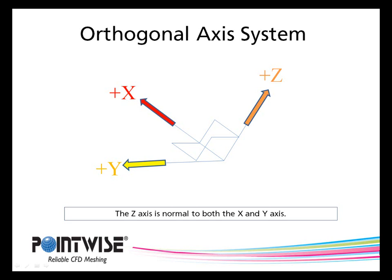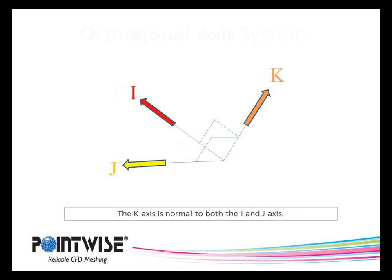Typically, engineers will call these the positive x, positive y, and positive z-axes. With regard to computational fluid dynamics, or CFD, these vectors are often called the i, j, and k directions.